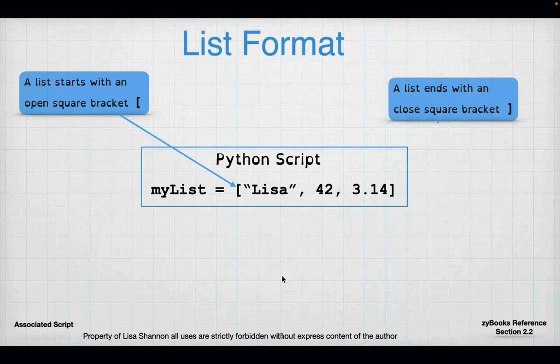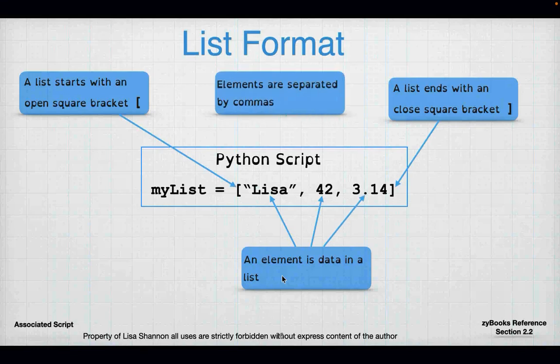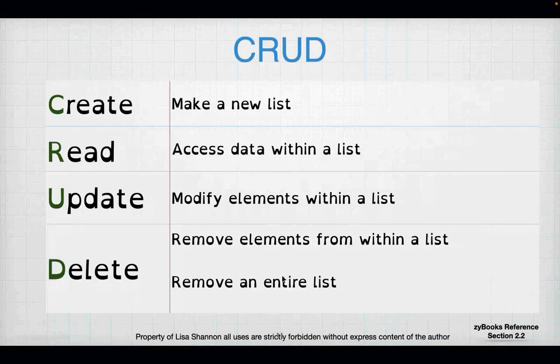A list starts with an open square bracket and ends with a closing square bracket. I can create a list with data or without data. Elements are separated by commas. What can I do with a list? I can do CRUD: Create, Read, Update, Delete. We're going to use this acronym a lot in this class. You can create a list, read a list, update a list, delete a list. You can do most of that with a string — you can't really update it, but you can do the C, R, and D.